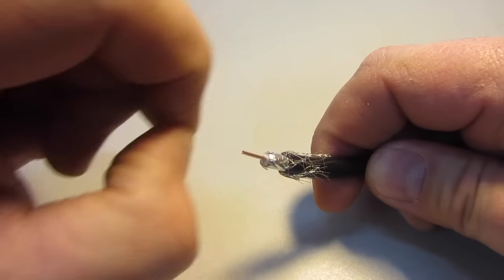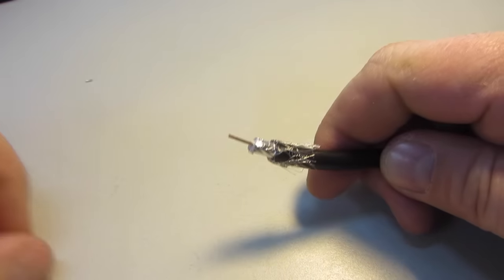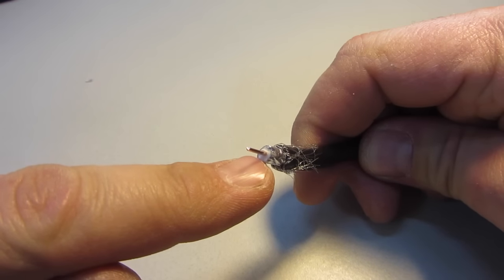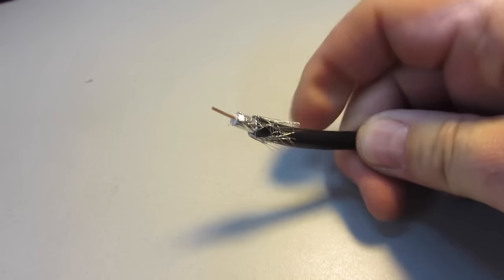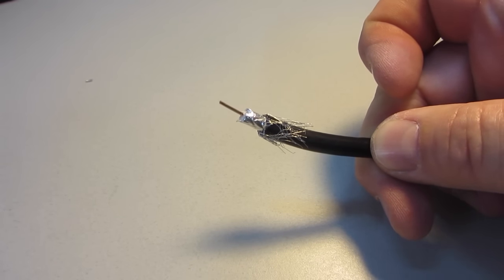Once you have cleaned off the wire, make sure all the other wires are pushed back. Now you can actually see that white core that surrounds this wire. This is what it is supposed to look like before we put the connector on.